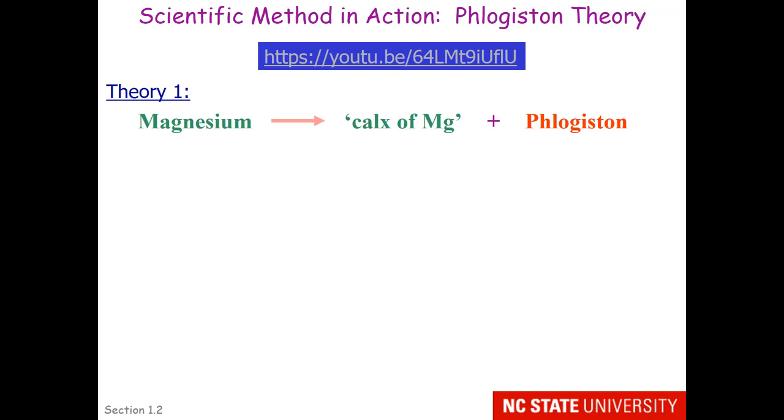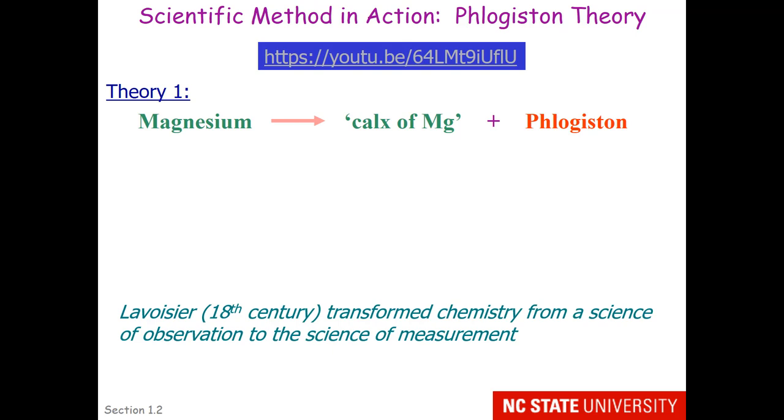And now I can release it. You can see how it just crumbles. What you saw in that video sort of looked like a sparkler. The magnesium, which was the gray ribbon, eventually turned into a white powder and gave off a lot of bright white light. So the theory was when magnesium burns, it gives off this bright white material called phlogiston and leaves behind the shell of the magnesium called calcs of magnesium.